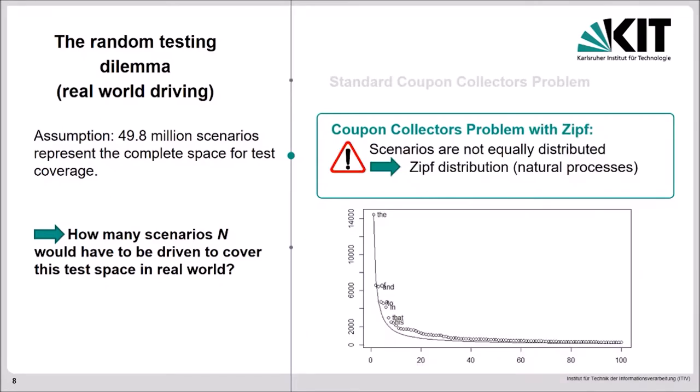But the problem is, our scenarios are not equally distributed. This is unlike the case of soccer player images in the standard coupon collector's problem. Not equally distributed means that there are some scenarios to be found with a higher probability than others. I think this is intuitively clear when you think of typical situations in everyday road traffic.